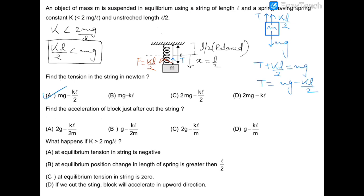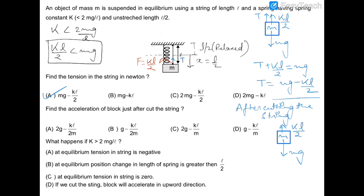For the second sub-question, if the string is cut, the spring still applies kl/2 upward while mg acts downward. Since kl/2 < mg, the block accelerates downward: a = (mg − kl/2)/m = g − kl/(2m). The correct answer is option B.